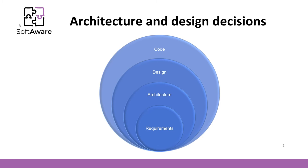Software engineers make various mistakes in the software construction phase. These mistakes can be corrected with less or more effort. However, the mistakes that are made in a software architecture are costly and very hard to correct. One cannot correct architecture mistakes with quality code.